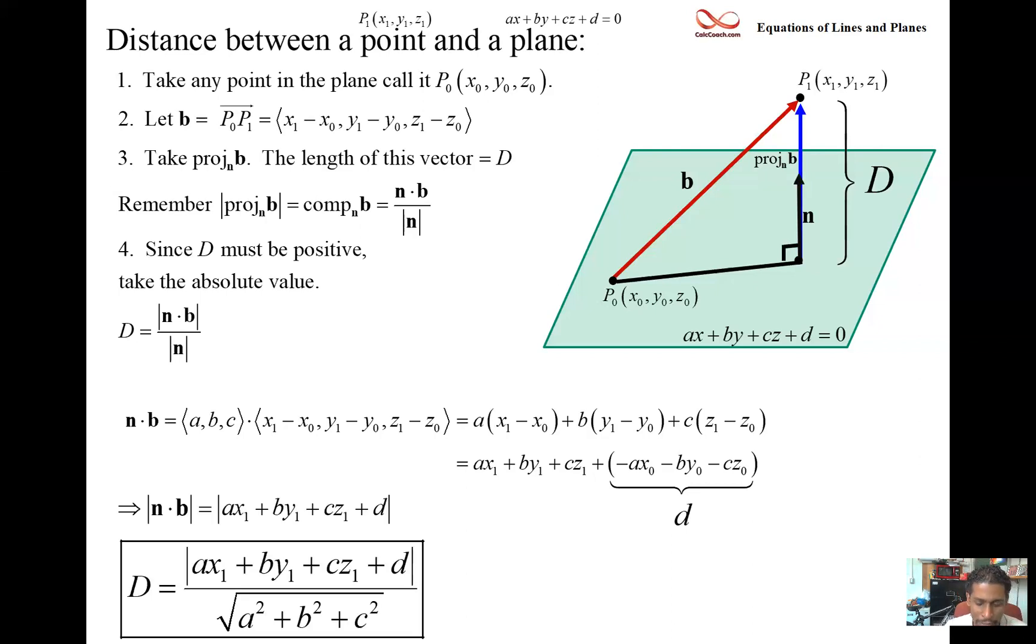And so we have exactly the formula for the distance between a point and a plane. It's |ax₁ + by₁ + cz₁ + d| divided by √(a² + b² + c²). Absolute value bars around the whole thing just in case it's negative. All right, great. We derived it. Now let's use it.